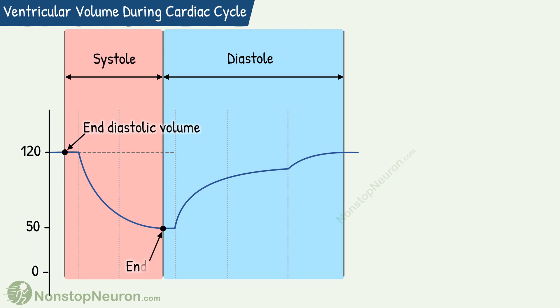Then we have end systolic volume. During systole, the ventricles do not get completely empty. Some blood is left in the ventricle at the end of the systole. The volume of this blood left in the ventricle at the end of the systole is called end systolic volume. Normally it is about 50 ml in each ventricle.